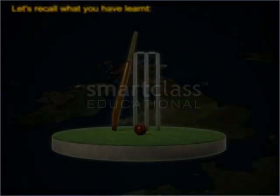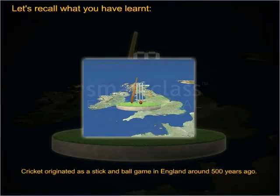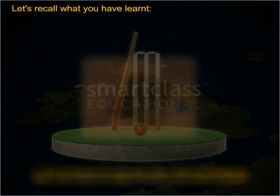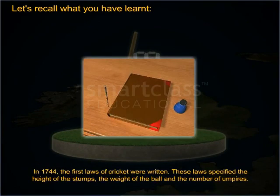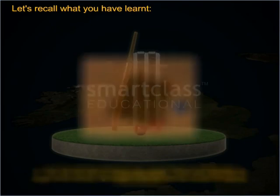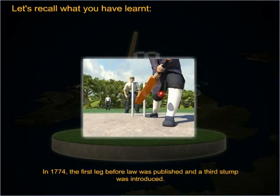Let's recall what you have learnt. Cricket originated as a stick and ball game in England around 500 years ago. In 1744, the first laws of cricket were written. These laws specified the height of the stumps, the weight of the ball, and the number of umpires. In 1774, the first Leg Before Wicket law was published and a third stump was introduced.